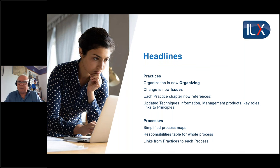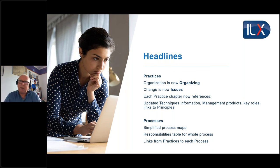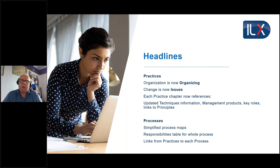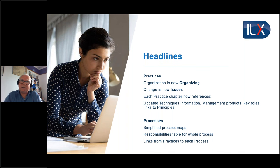The process maps in the manual have been simplified, and the individual process activity diagrams have been removed - there's now just a single process map for the entire process followed by a discussion of activities. A key improvement is that instead of hunting through tiny tables in each activity section to find responsibilities, there is now a single responsibilities table per process covering who is accountable, who checks, who is responsible, who is consulted - aligned with a RACI-style approach.